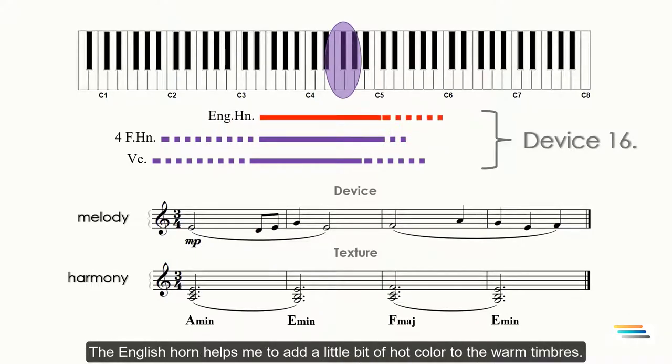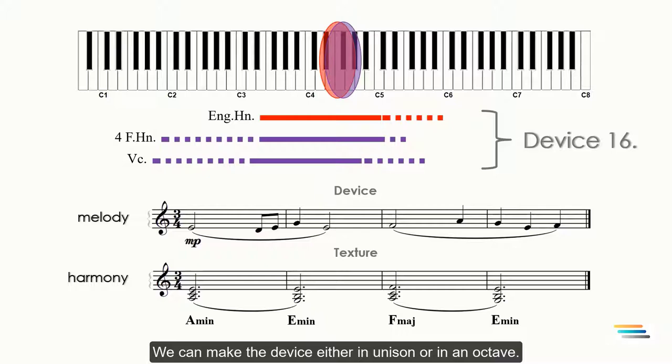The English horn helps me to add a little bit of hot color to the warm timbres. We can make the device either in unison or in octave. Today, I will use just a unison combination. In general, the warm timbre will be dominant.